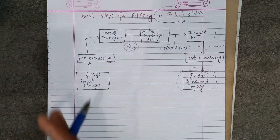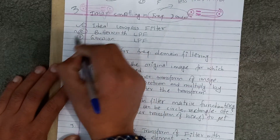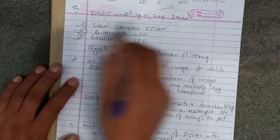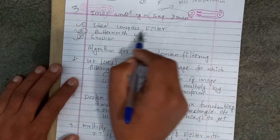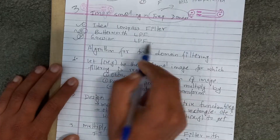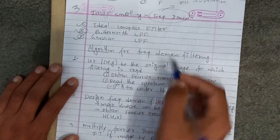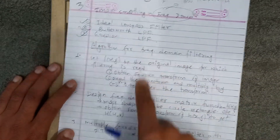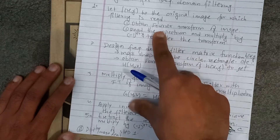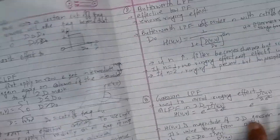Now, image smoothing in the frequency domain. This is the same as the ideal low-pass filter, Butterworth low-pass filter, and Gaussian low-pass filter. This is the same as the frequency domain filtering algorithm — the same step and the same numerical function.